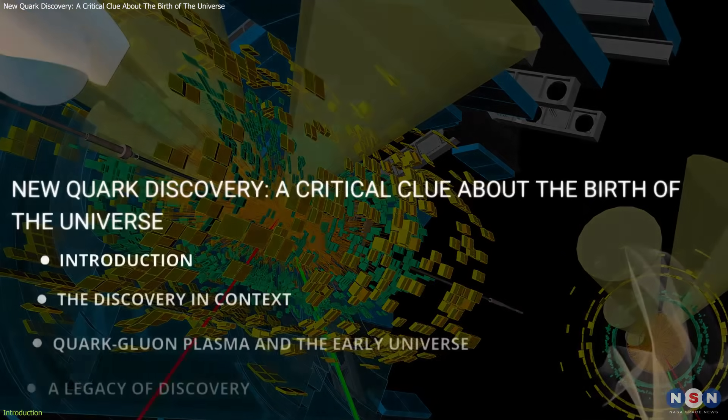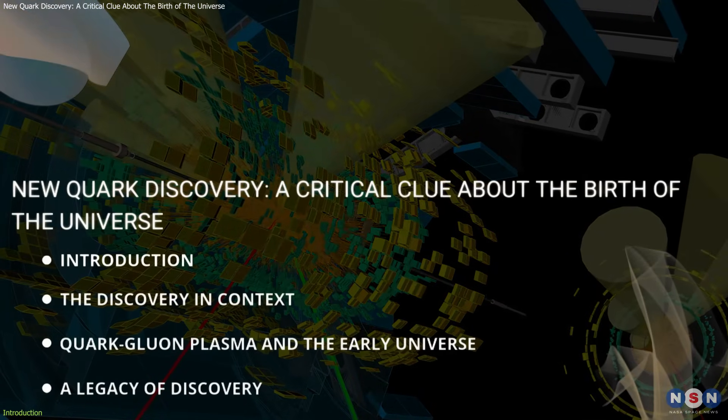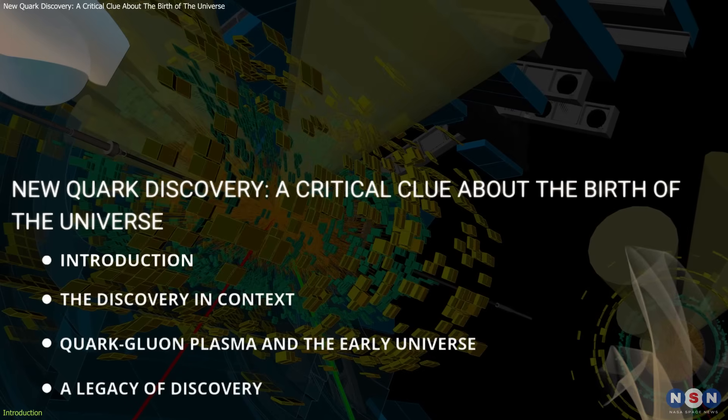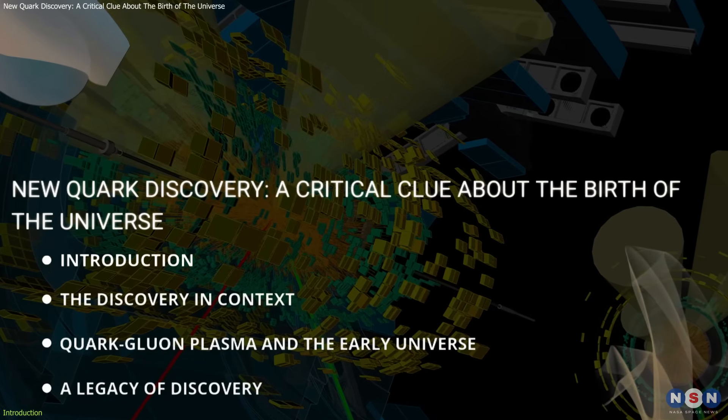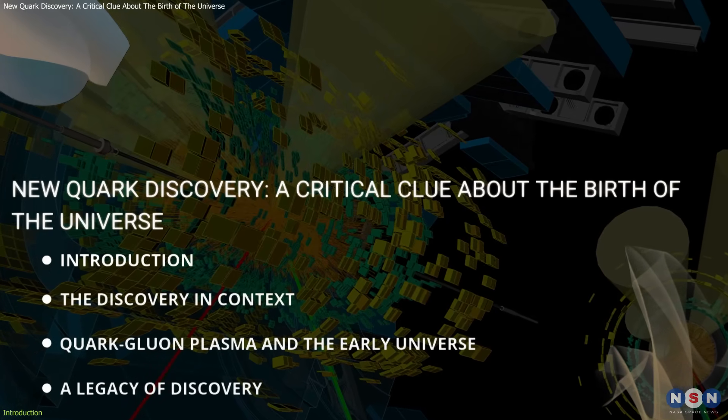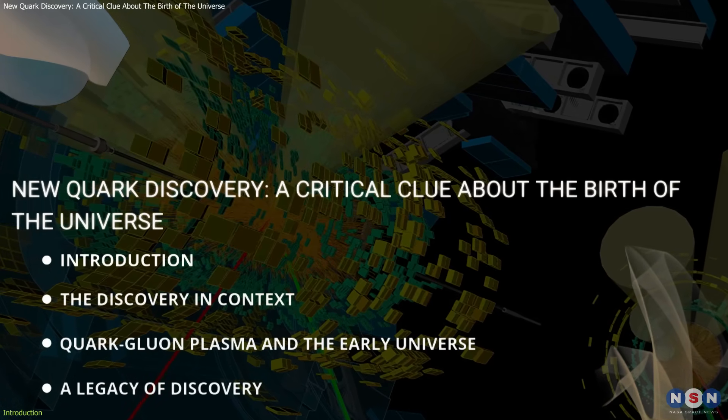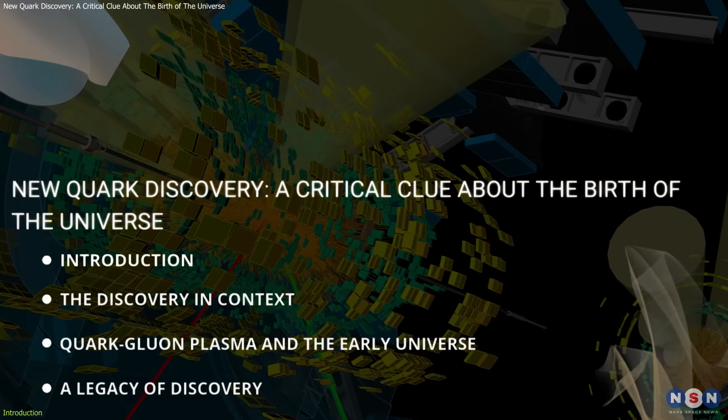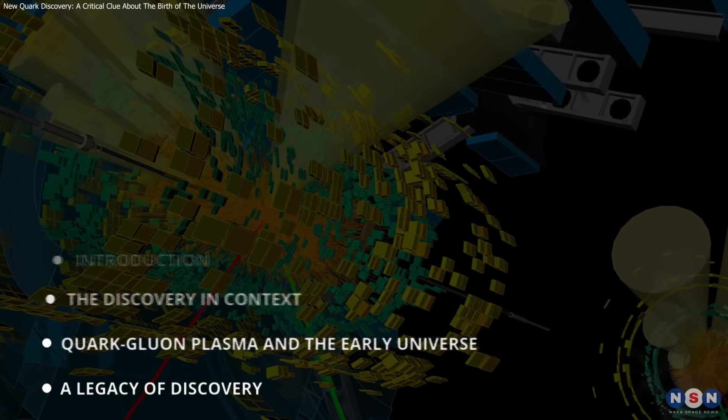In this video, we'll explore what exactly happened at CERN that led to this discovery, why detecting top quarks in lead ion collisions is such a big deal, what this tells us about the early universe, and how it reshapes our understanding of fundamental physics. So, without further ado, let's get started.